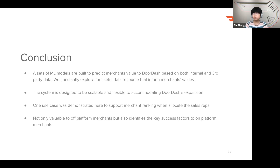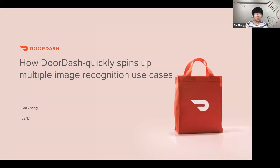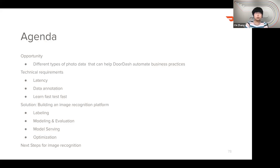Next, Chi will talk about the image recognition models here at DoorDash. Hey everyone, I'm Chi. I've been at DoorDash for two and a half years. I'm a data scientist working on ETA and assignment problems mainly. I was also actively involved in the very first few image-related use cases, which will be today's topic. I want to talk about what opportunities we have here at DoorDash, what different types of photo data we have and how they can help automate our business practices, what technical challenges we face in using that image data, what our solution is, and what our vision is for the future of the image recognition workstream.